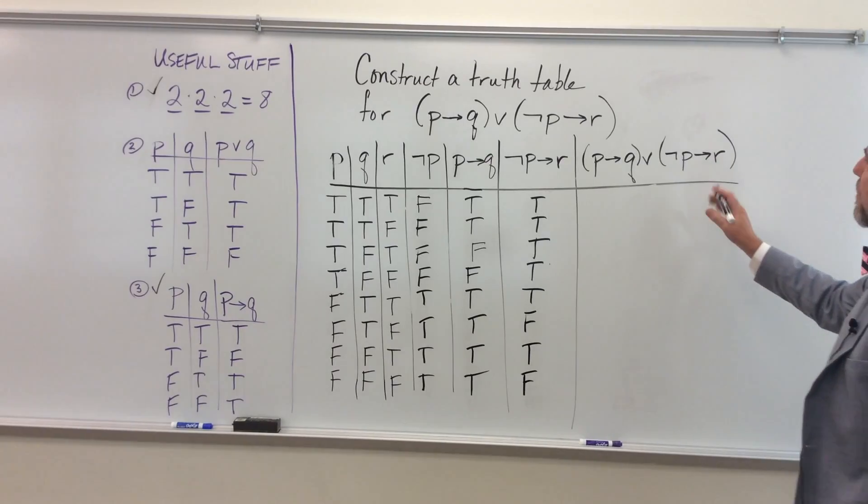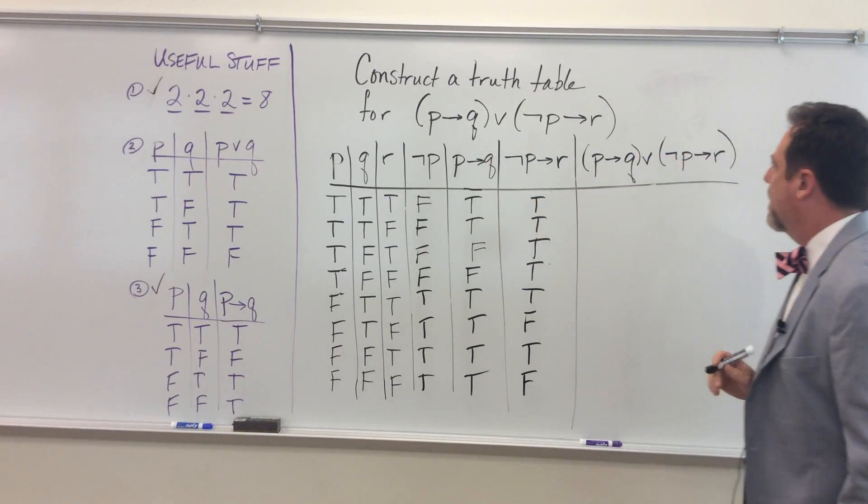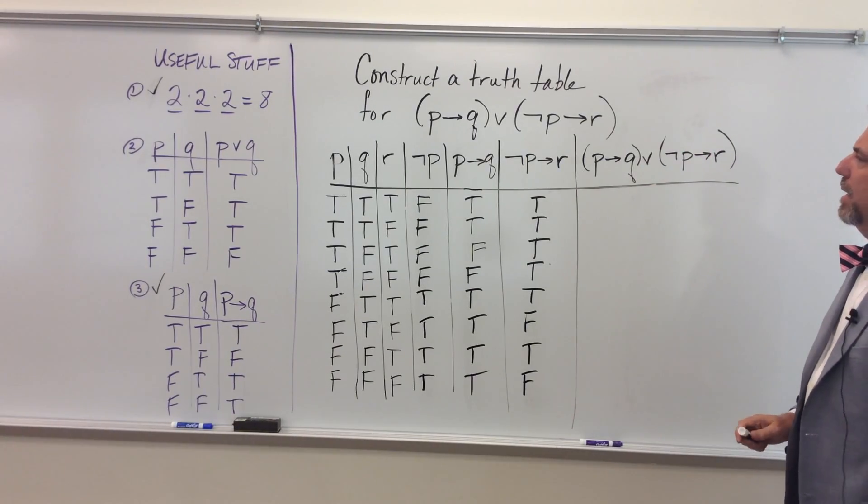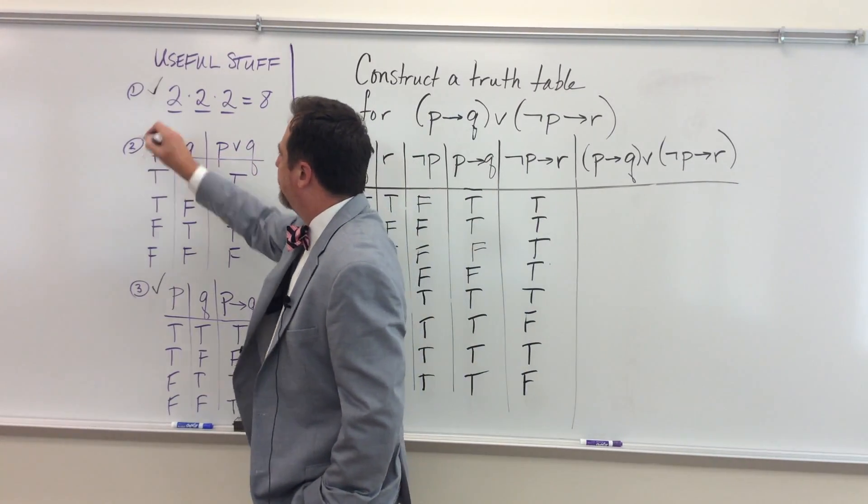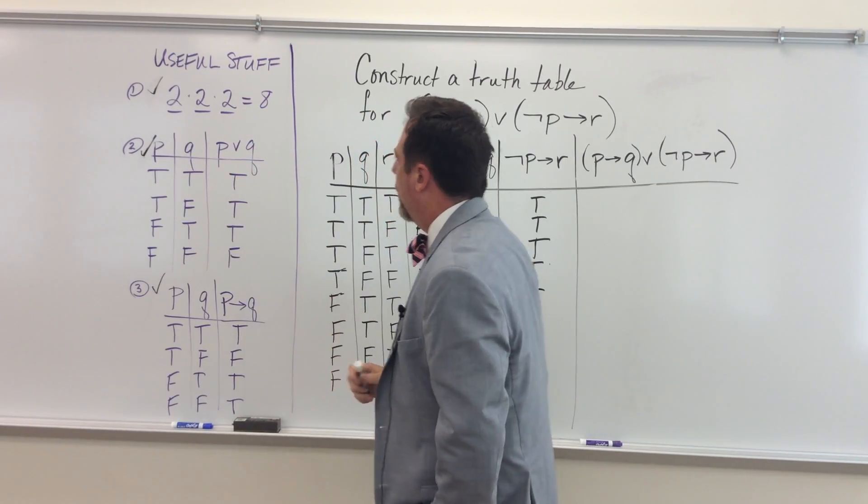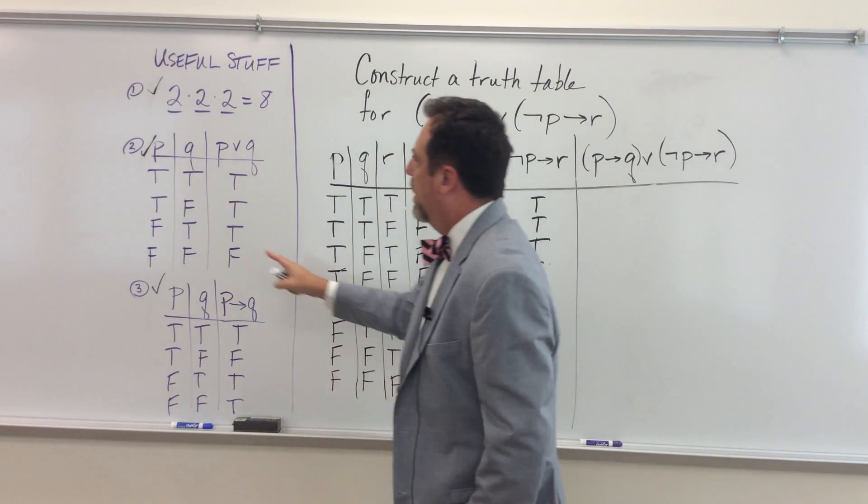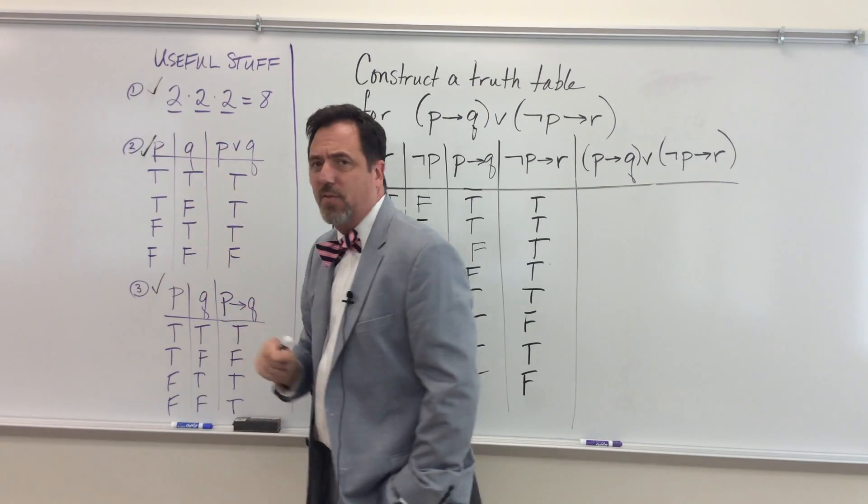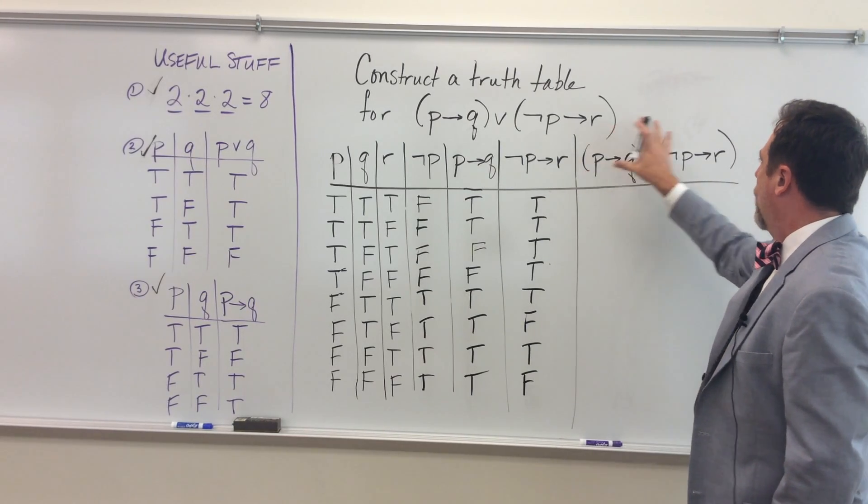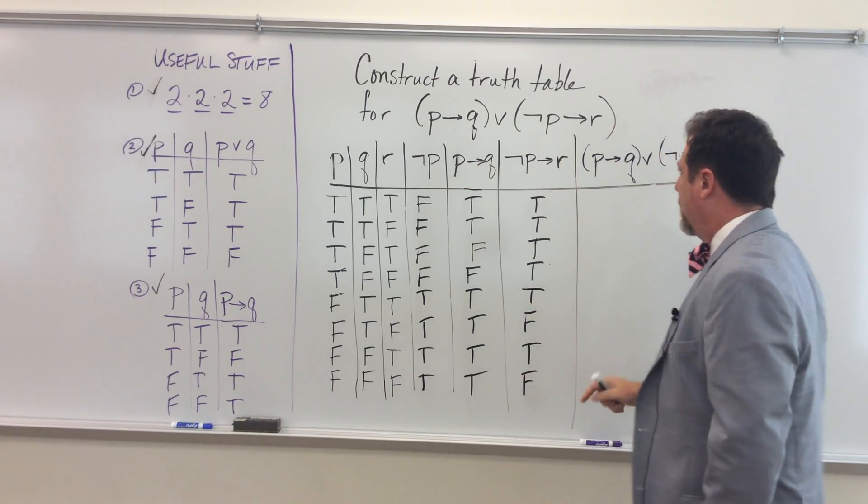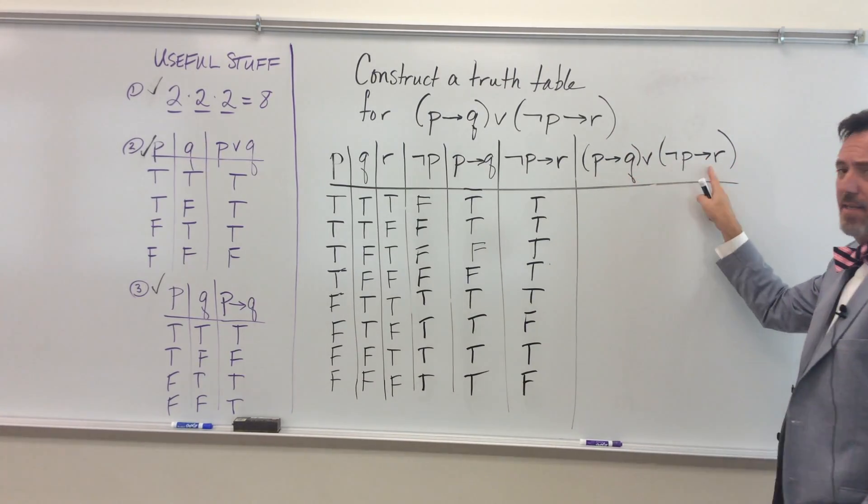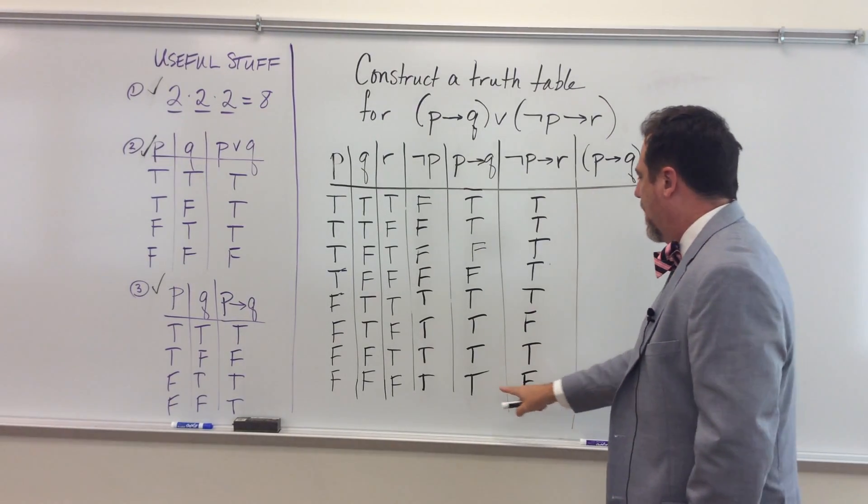Now what's nice is I have everything I need right here and here to figure out the truth value of this guy. And I have the last part of my cheat sheet over here and it turns out that if I have P or Q, the only time that that's false is when P is false and Q is false. So I can use that over here. I have this guy or this guy. The only time that this whole thing is going to be false is when both of these guys individually are false.